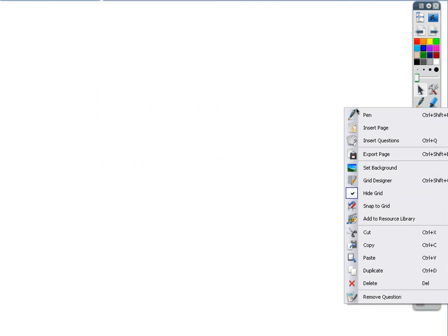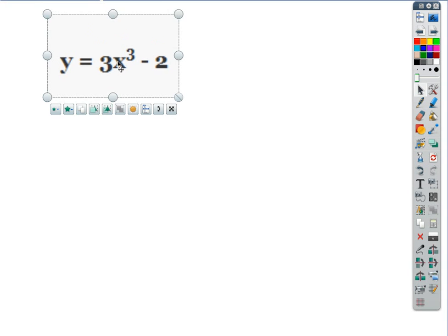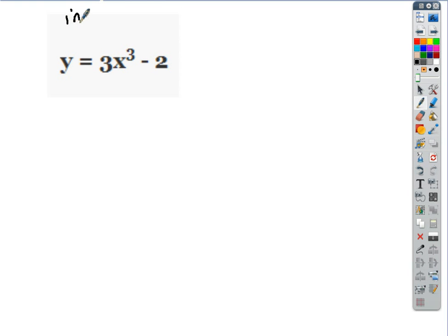So we're finding the inverse of this. Switch x and y. So that becomes an x. What are the steps we would go through to isolate y? First, add 2, divide by 3, and cube root.